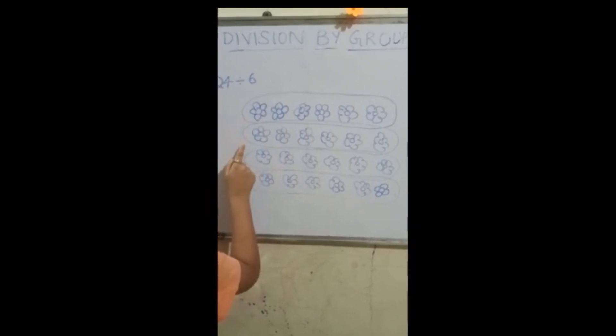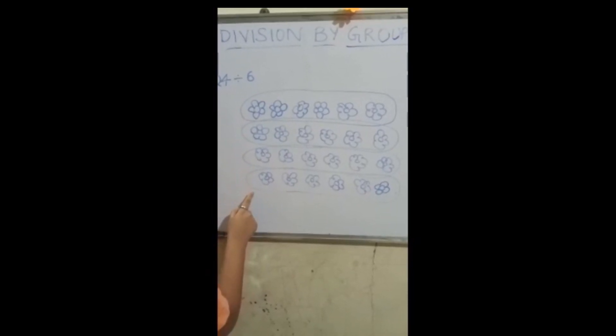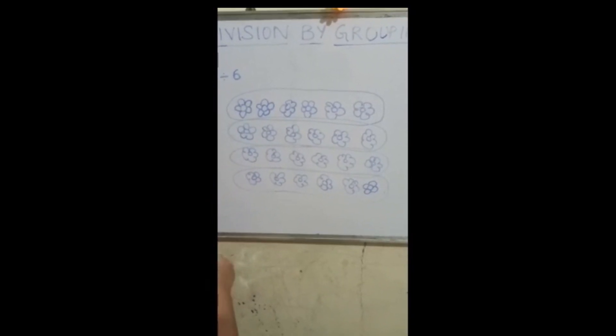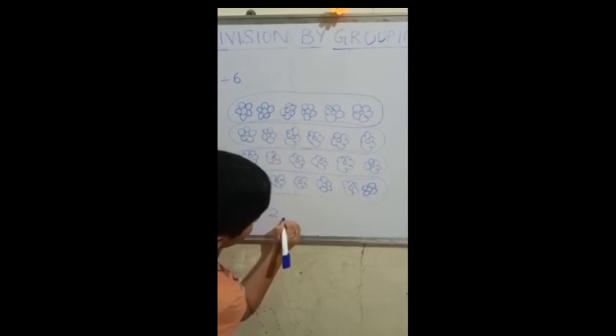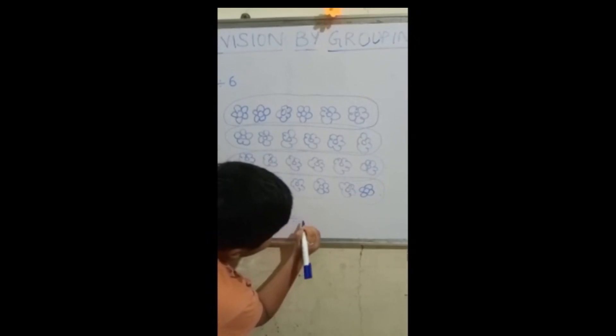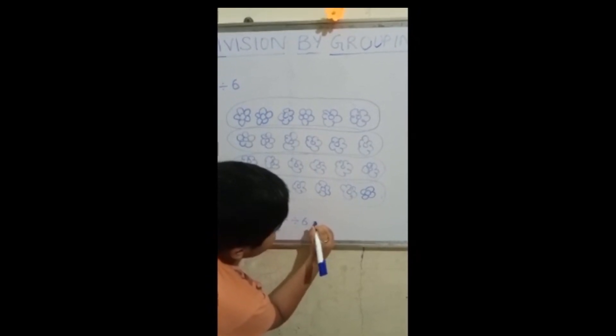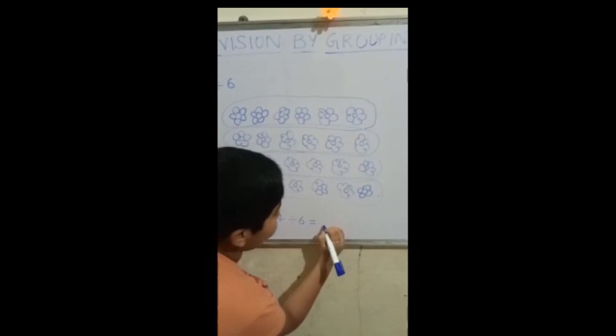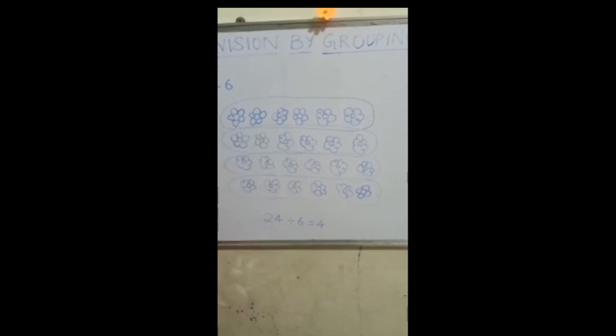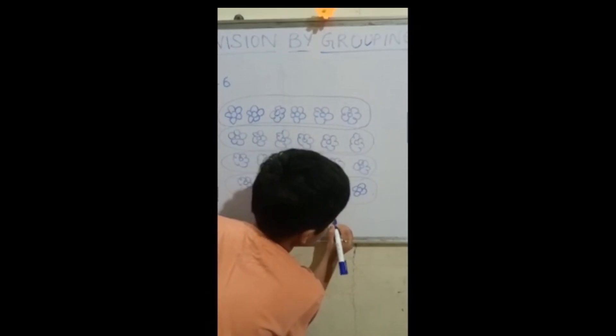Now let's count the groups. 1, 2, 3, 4. So, 24 divided by 6 is equal to 4. And the remainder will be zero.